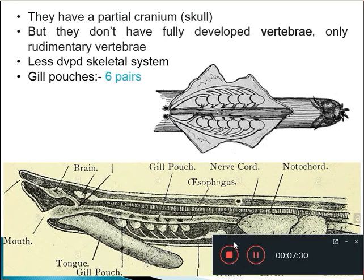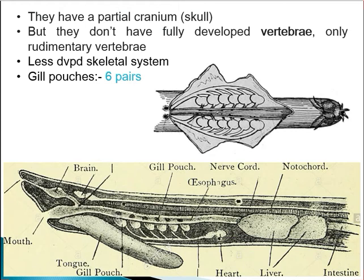The skeletal system of Myxene features a partial cranium which protects the brain but is not well developed. Vertebrae are rudimentary in hagfishes. All skeletal elements present are cartilaginous — there is no trace of bone.